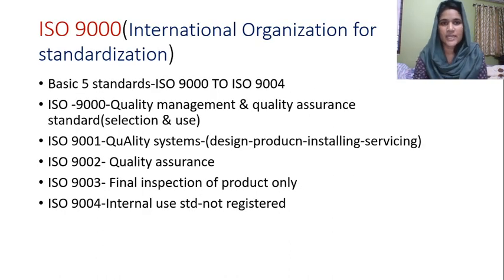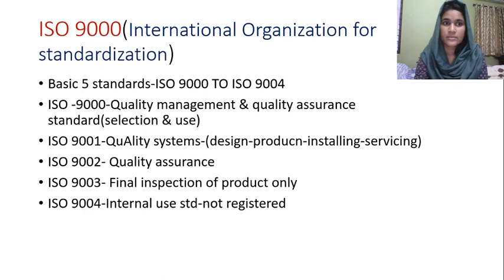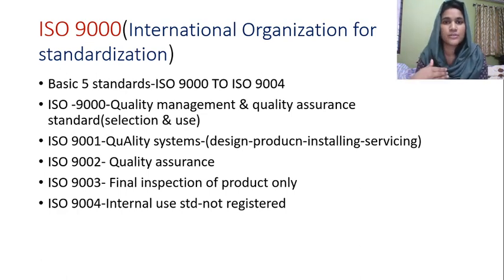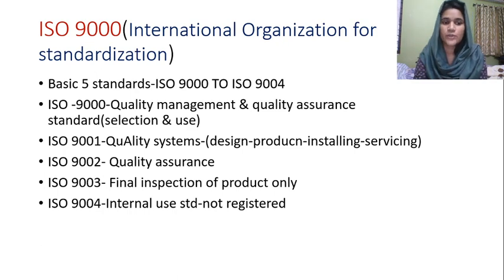ISO 9000 stands for the International Organization for Standardization. There are 5 basic standards from 9000 to 9004, covering Quality Management and Quality Assurance. ISO 9000 covers how to select and use. ISO 9001 is the quality system covering design, production, installation, and service. ISO 9002 is quality assurance. ISO 9003 is final inspection. ISO 9004 is for internal use.